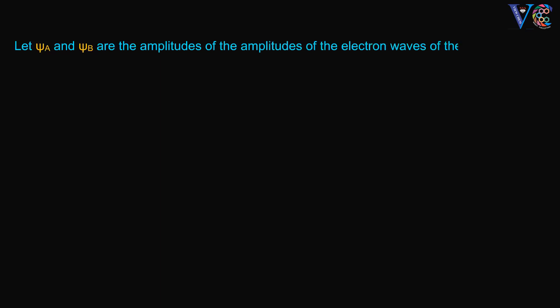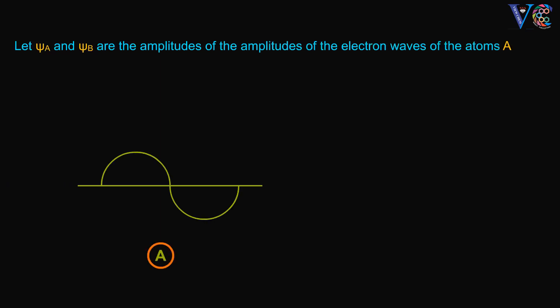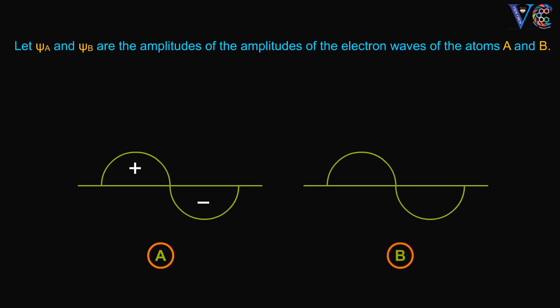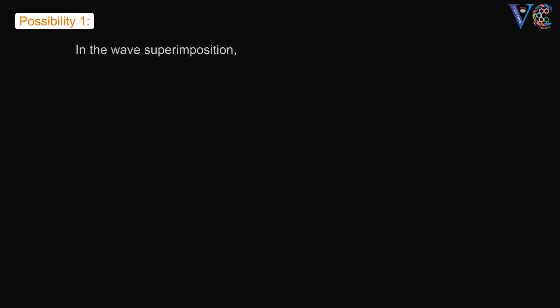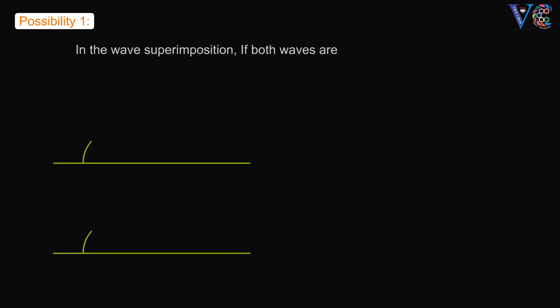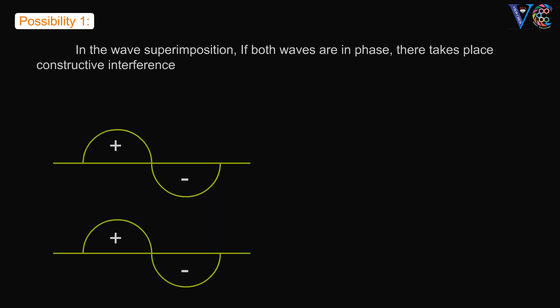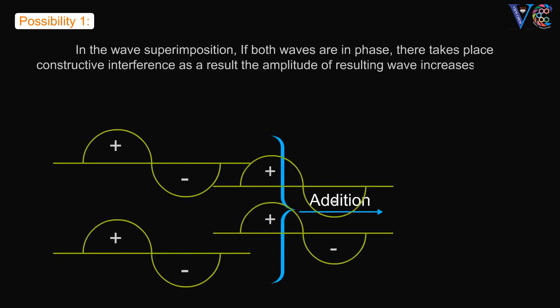Let psi A and psi B be the amplitudes of the electron waves of atoms A and B. Possibility 1: In wave superimposition, if both waves are in phase, constructive interference takes place. As a result, the amplitude of the resulting wave increases.